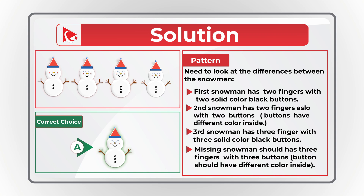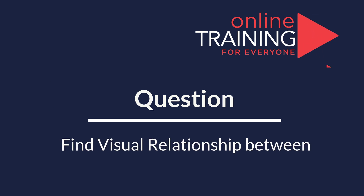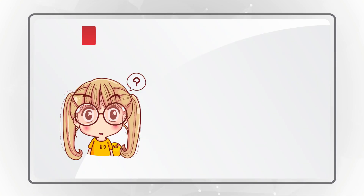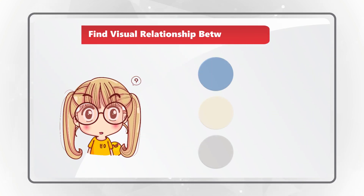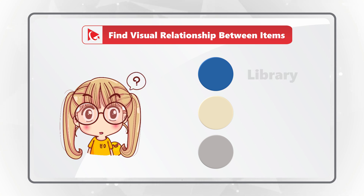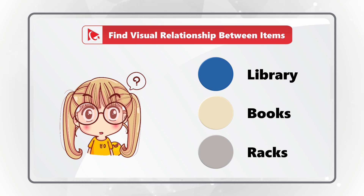Hopefully you've nailed this question and now know how to answer similar problems on the test. Here's an amazing question which tests your analytical skill, logical thinking skills, as well as spatial reasoning skills. You are presented with three circles. Each circle represents an object. The objects are: library, represented by the blue circle; books, represented by the yellow circle; and racks, represented by the gray circle. You need to select the visual relationship between the items.